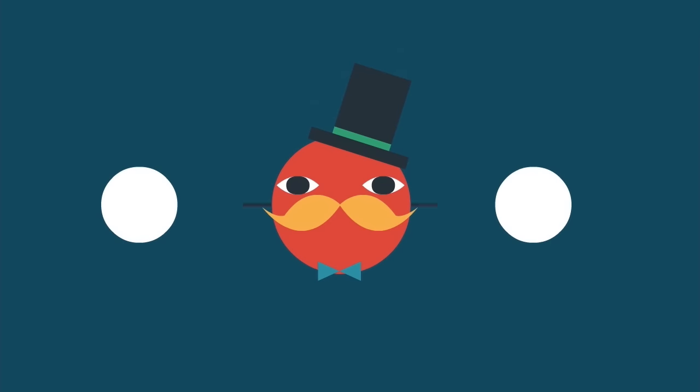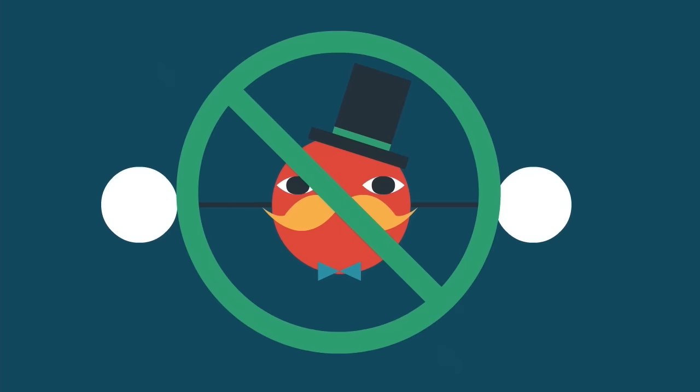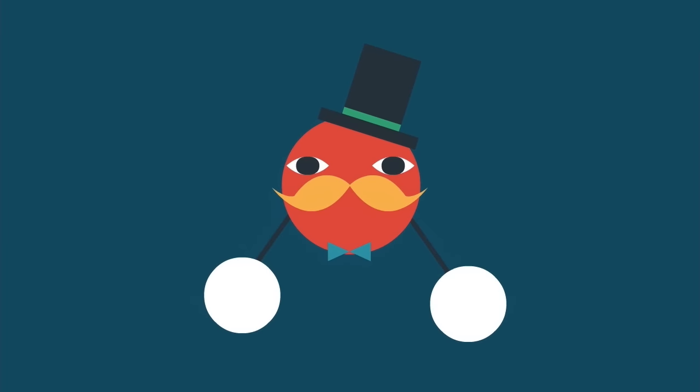We draw covalent bonds with a single straight line between the two atoms that are electron sharing, but you shouldn't draw a water molecule like this. It should actually be drawn bent like so.